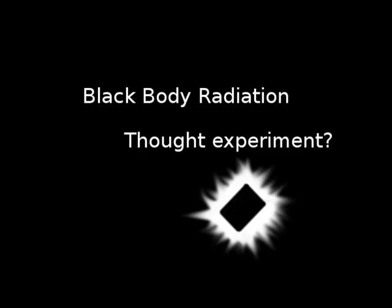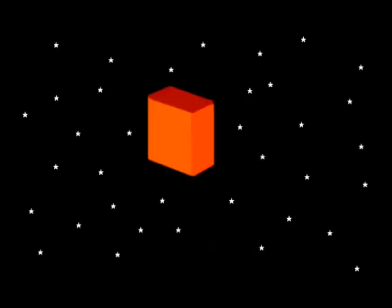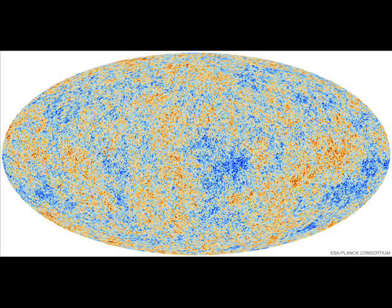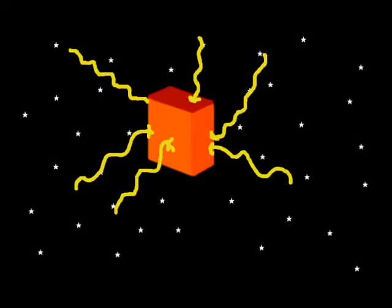Imagine a box floating in space far away from anything, out there in the vast nothingness of space. Now recall that throughout all of space there is the light radiation left over from the big bang. It is this that we measure when we look at the cosmic microwave background radiation. So as the box is floating out in space some of the leftover light will be falling on the box and hitting it.